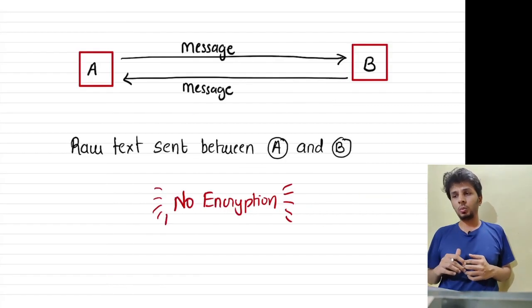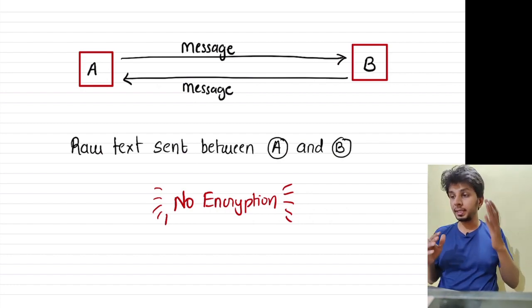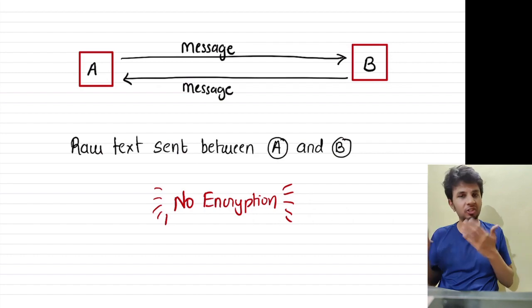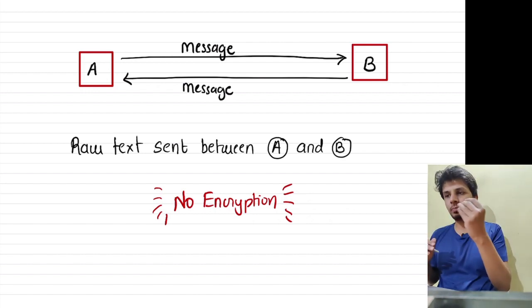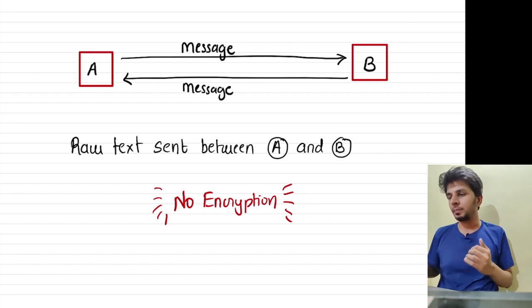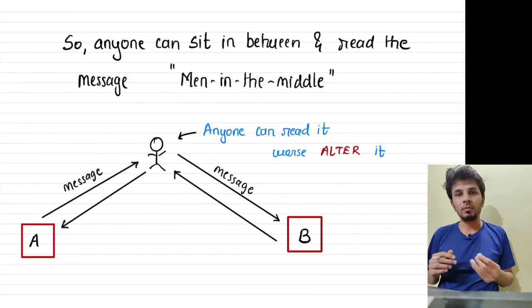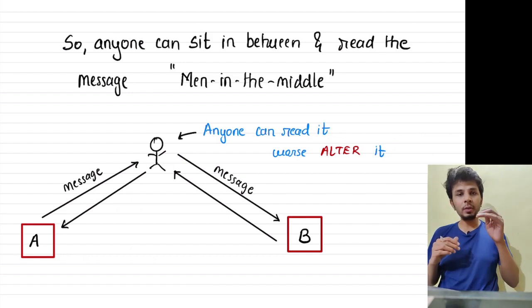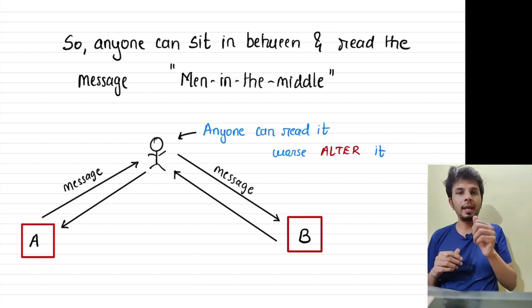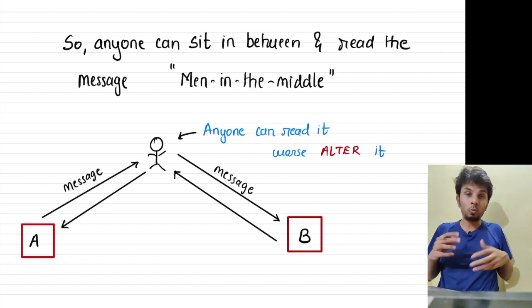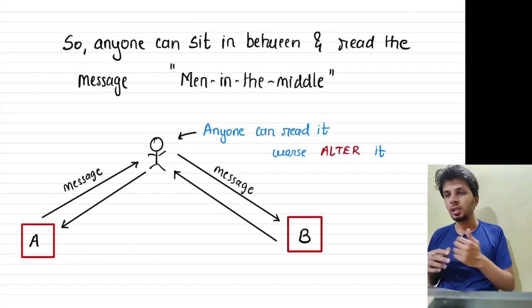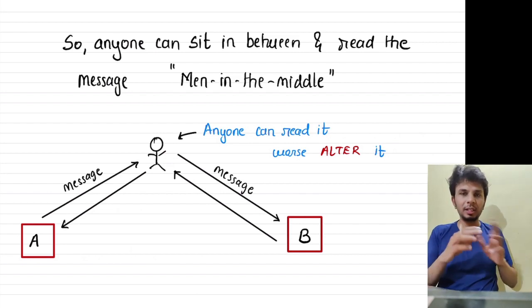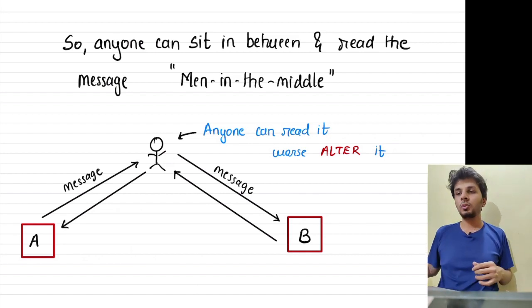We have two parties A and B trying to chat, exchanging messages over an unencrypted channel — you can assume it's WhatsApp or any communication channel. Since it's unencrypted, it is susceptible to a very famous attack: the man-in-the-middle attack. Anyone can sniff the channel and extract the information out of it, or worse, can actually alter messages and pretend to be someone else. This is really bad for any messaging system.